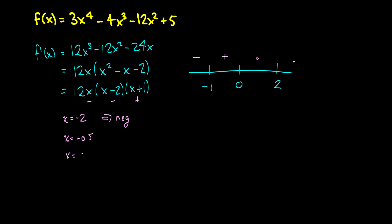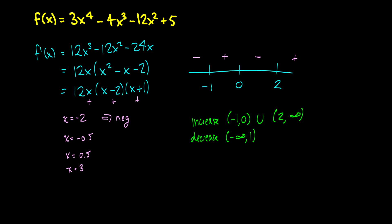Picking x = 0.5 gives a positive times a negative times a positive, so that interval is negative. Picking x = 3 gives a positive times a positive times a positive, so after 2 it is positive. So f is increasing on (-1, 0) and (2, ∞), and decreasing on (-∞, -1) and (0, 2). We don't include the endpoints since the derivative is 0 there — it's neither increasing nor decreasing.